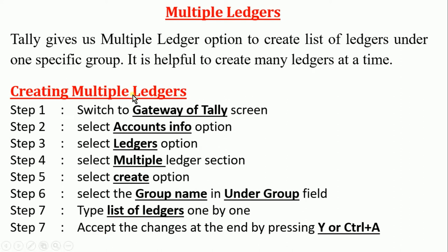The step-wise method to create multiple ledgers: Step one, switch to Gateway of Tally screen. Step two, select Accounts Info option. Step three, select Ledgers option. Step four, select Multiple Ledger section. Step five, select Create option. Step six, select the group name in the Under Group field. Step seven, type the list of ledgers one by one. Step eight, accept the changes by pressing Y or Ctrl+A. This is how we can create multiple ledgers.